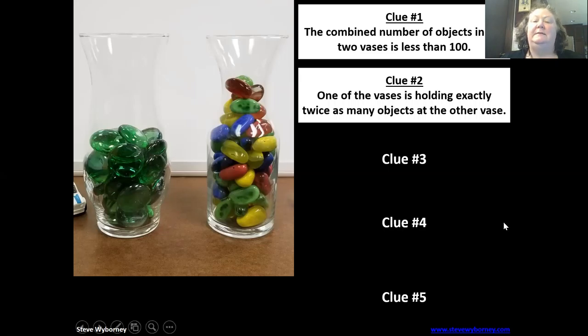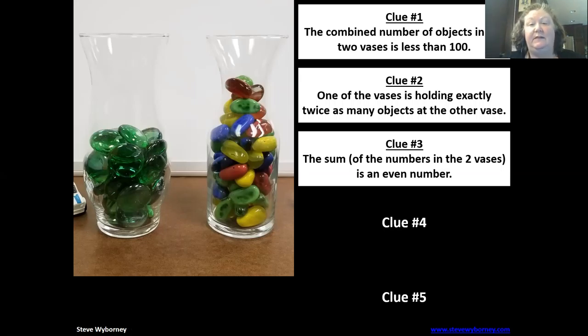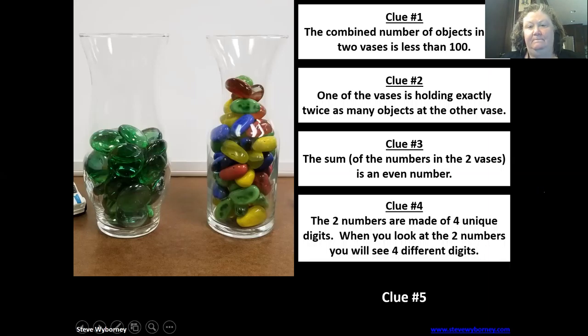So if I add together what I think is in the green vase plus what's in this one together, the number is even. Clue four: the two numbers are made of four unique digits. So it can't be 22 and 44 because I can't use the same number more than once.